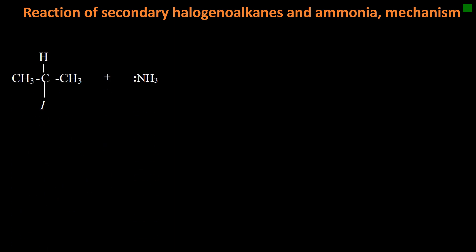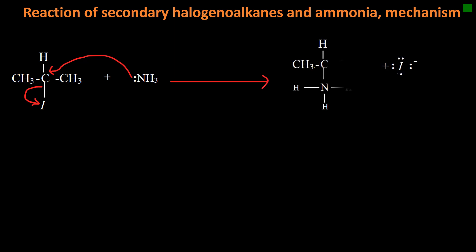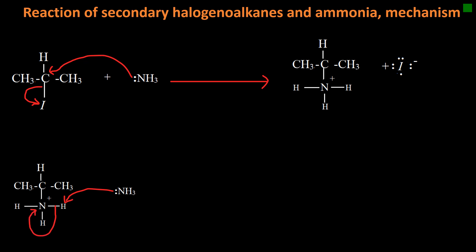Reaction of a secondary haloalkane with ammonia. Secondary haloalkanes undergo two types of mechanisms: SN1 and SN2. Starting with SN2: ammonia attacks nucleophilically on the electron-deficient carbon, and the electrons repel the electrons of the bond between carbon and iodine, forming an ammonium ion and an iodide ion. The ammonium ion is stabilized by another molecule of ammonia, which acts as a base and abstracts a hydrogen from the ammonium ion. The electrons of the bond between hydrogen and nitrogen are donated to the nitrogen atom, producing an amine molecule and an ammonium ion.